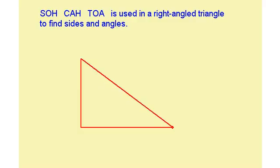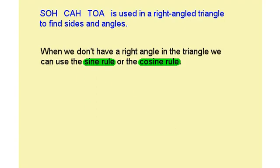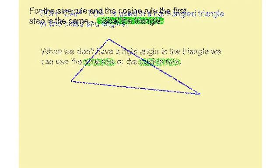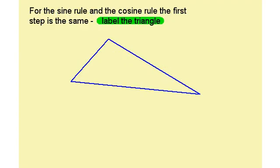When we have a right-angled triangle, we can use SOH CAH TOA to find the sides and the angles. If our triangle is not a right-angled triangle, we can't do this and we instead need to use the sine rule or the cosine rule. For both of these rules, the first step is the same: we need to label the triangle. I label the angles A, B and C. Then the side opposite A is a, this side is b, and this side is c.